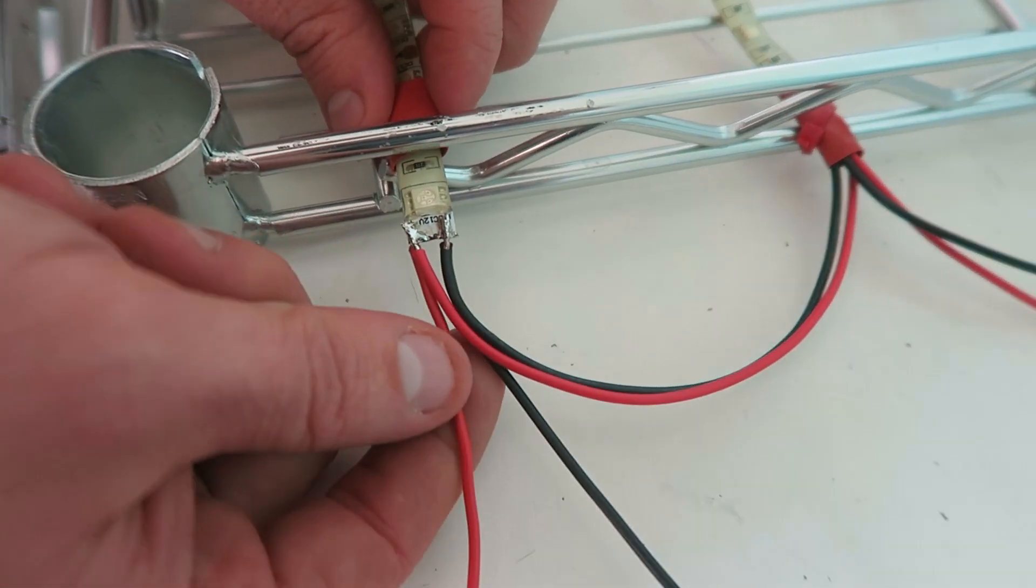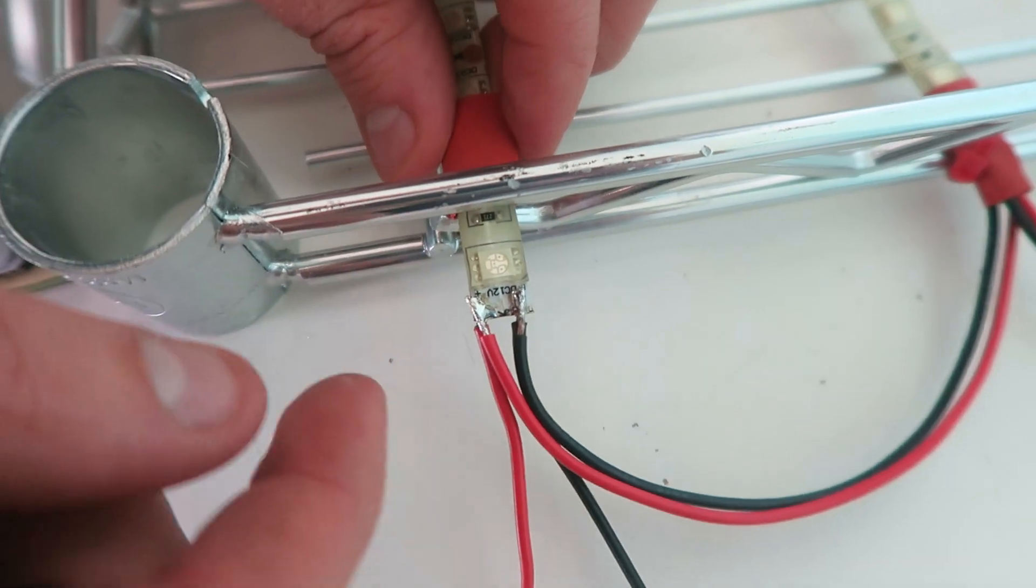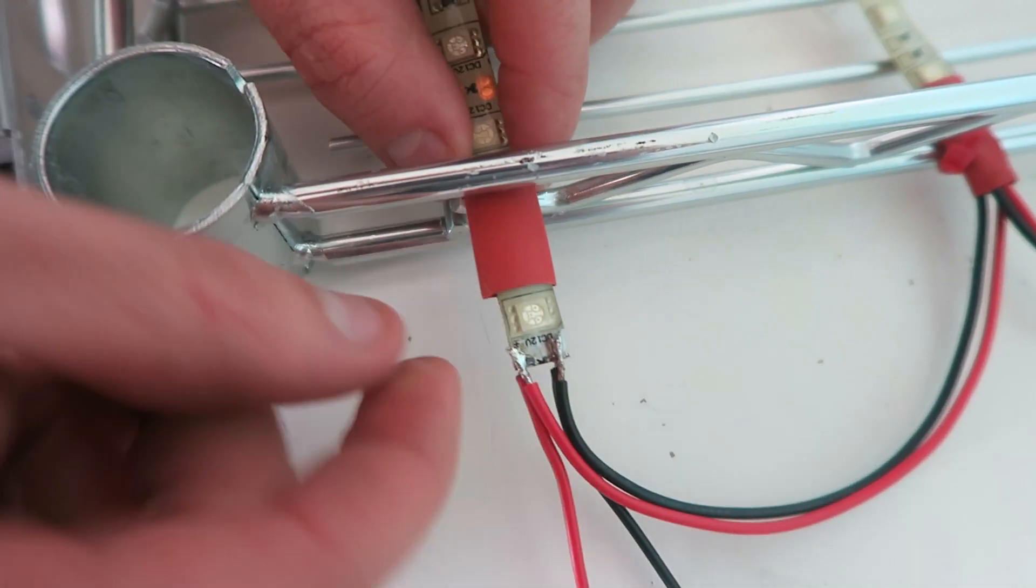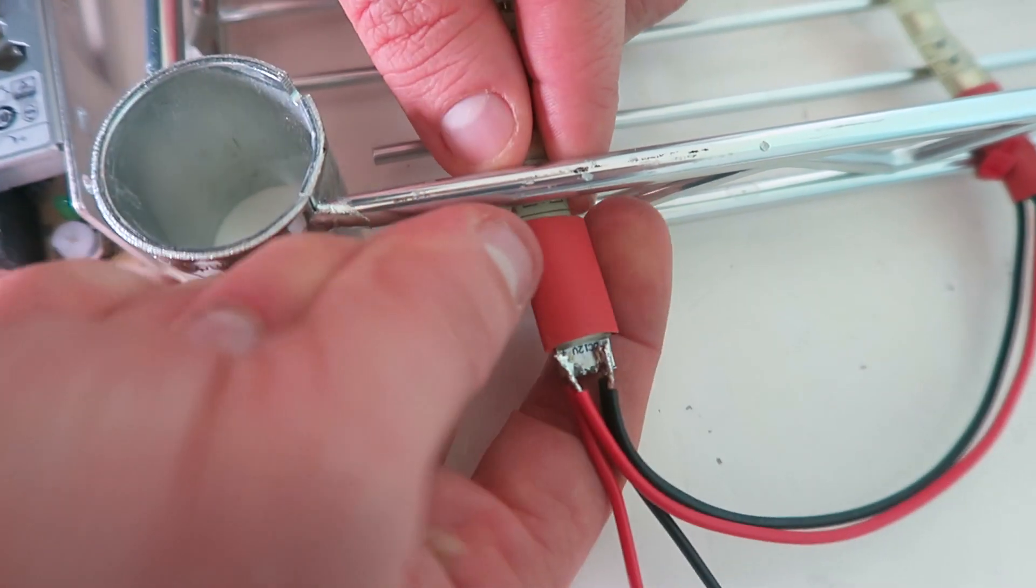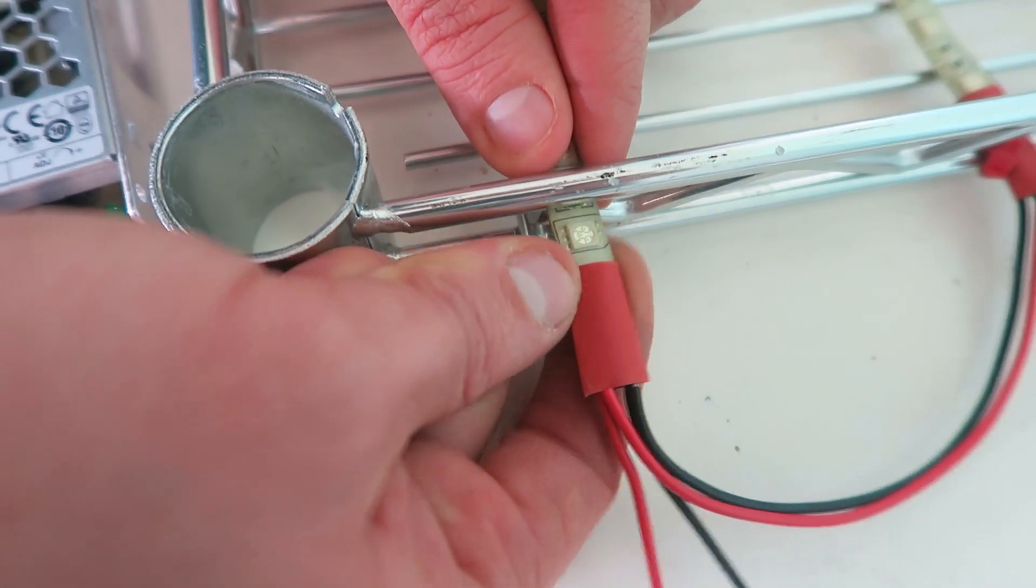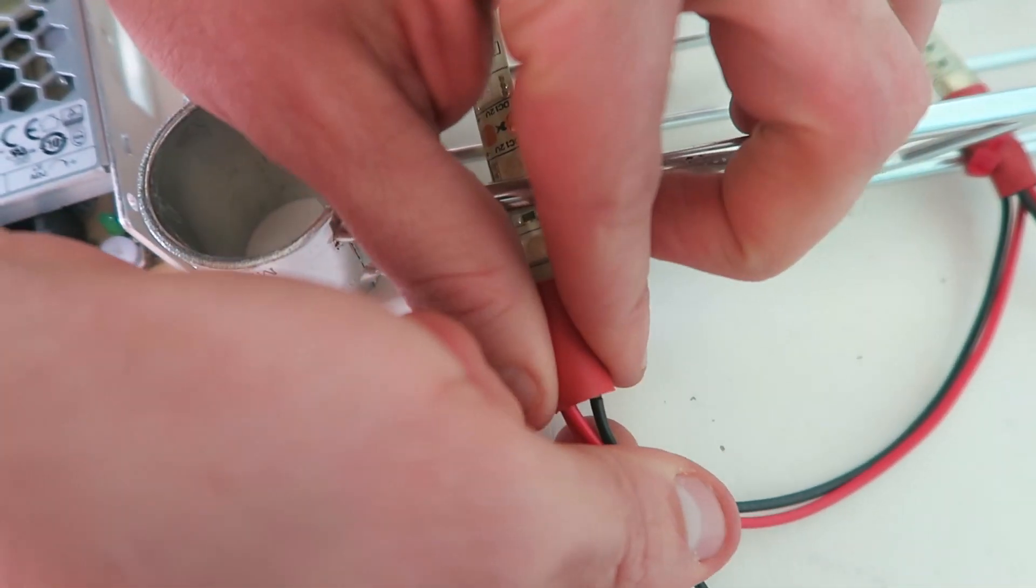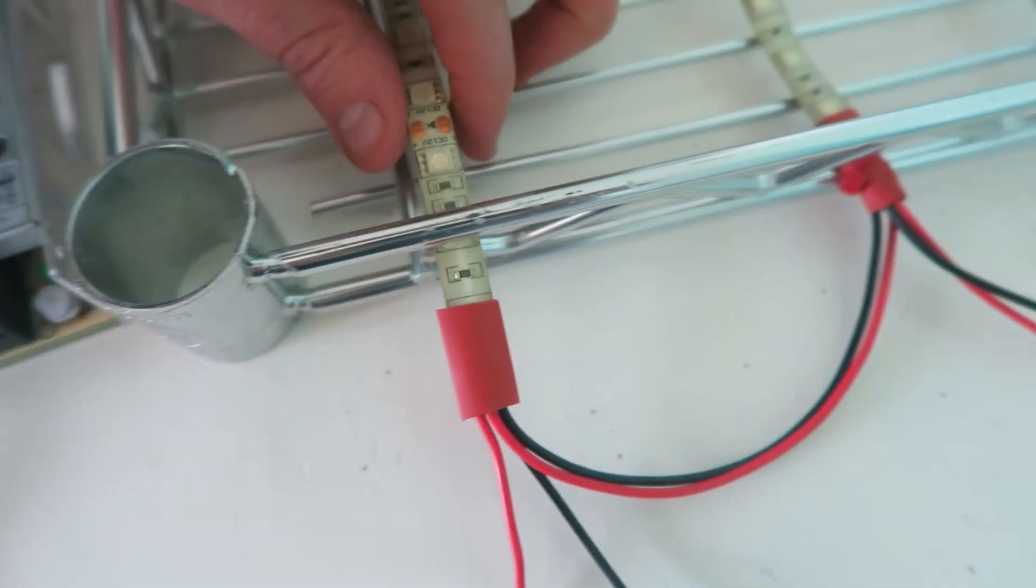I'll just show you without the shrink wrap. So then you just connect them like that and you just put the shrink wrap on and then you just shrink wrap that.